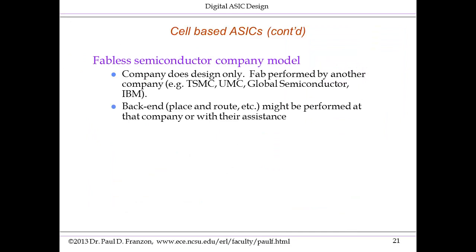Cell-based ASICs are typically done using the fabless semiconductor company model. There are many companies that do design, but only a few that do the fab — for example, TSMC, Global Foundries, or IBM. Intel is now in the fab business as well. The company doing the design either sends the fab a full set of mask information, or sometimes sends a netlist — what the gates are and how they're connected — and the company helps with place and route. These days there are only a few fabs, particularly at the more advanced nodes, and many more companies doing design.